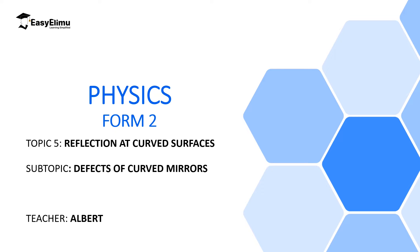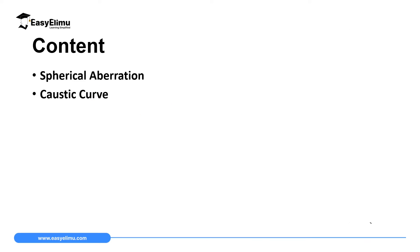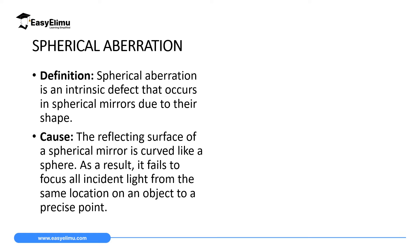My name is Albert. I hope you will enjoy the lesson. By the end of this lesson, I expect you to be able to describe how spherical aberration occurs, how a caustic surface is formed, and how it can be corrected using parabolic mirrors. When we talk about spherical aberration, we are talking about an intrinsic defect that occurs in spherical mirrors due to their shape.